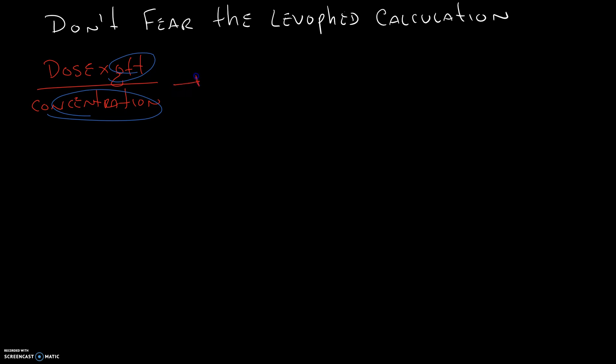So let's look at this with these constants written in. The dose times — what is the constant drip set? What is always the drip set for a medicated drip? It's always going to be 60. All over the concentration. What's the concentration of Levofed? The concentration of Levofed is 16 micrograms per milliliter. Now I'm not going to discuss how to come up with that concentration. If you're unsure on how to do a Levofed drip, I recommend that you find a video on how to mix Levofed into your saline bag. Typically it's 4 milligrams in 250 milliliters or 8 milligrams into 500 milliliters, and it turns out to a 16 microgram per milliliter concentration.